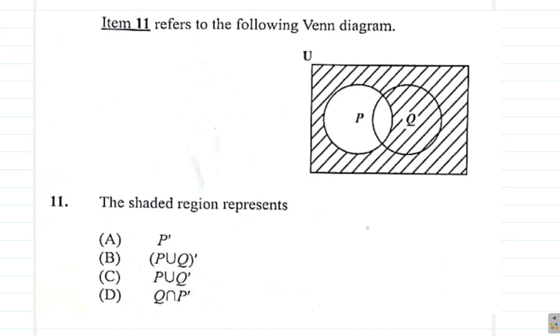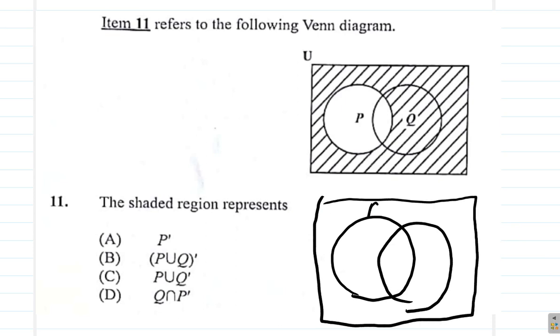Q intersect P complement. If that were so, if D were the case, I have P and Q here. You are going to have Q. No. All of this here is Q. Intersect what? P complement. P complement would be outside of this. Outside of P. So this is what would be shaded.